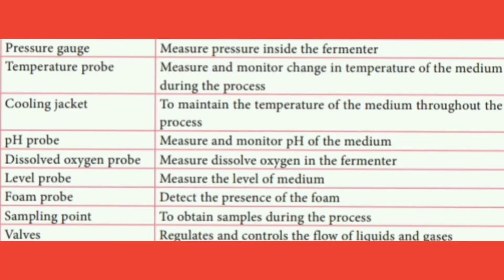Another important part is the pressure gauge. As the name suggests, the pressure gauge is used to measure the pressure inside the fermenter or bioreactor. Next is the temperature probe, which is used to measure and monitor any sort of temperature change in the medium during the entire fermentation process.